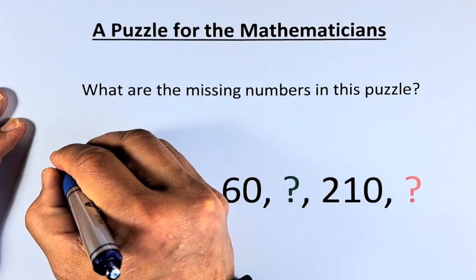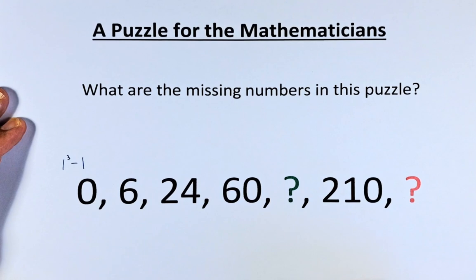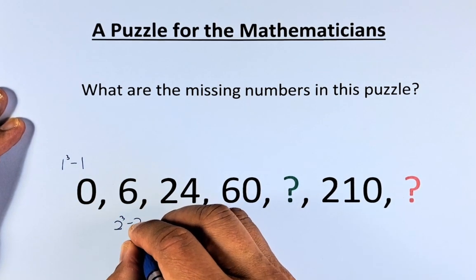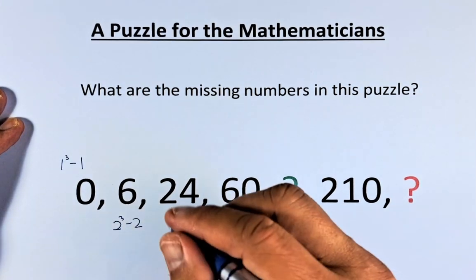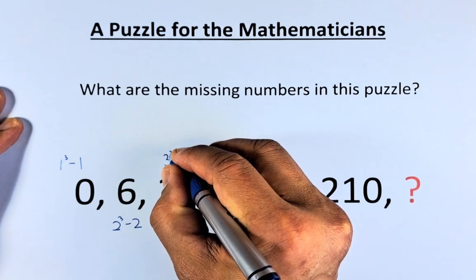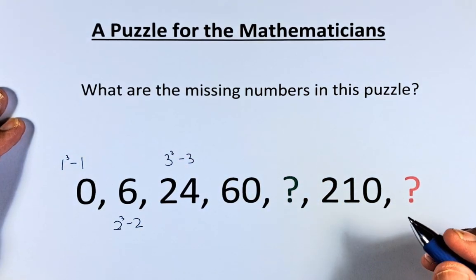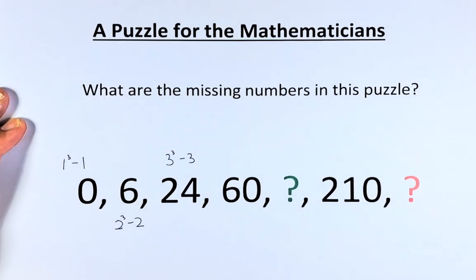0 is actually 1 cube minus 1. You will see the pattern in a while. 6 is the same as 2 cube minus 2 because 2 cube is 8, 8 minus 2 is 6. You know the pattern now. 24 is 3 cube minus 3 because 3 cube is 27, 27 minus 3 is 24.